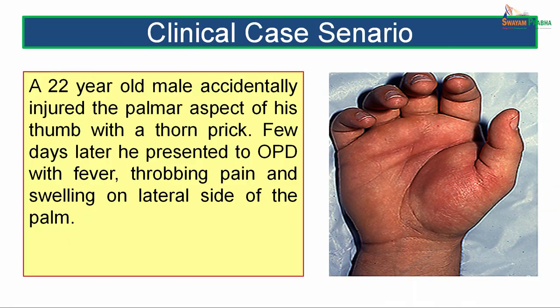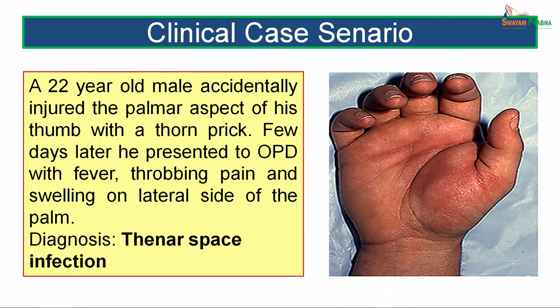Let us first see a clinical case scenario. A 22-year-old male accidentally injured the palmar aspect of his thumb with a thorn prick. Few days later, he presented to the OPD with fever, throbbing pain and swelling on the lateral side of the palm. The diagnosis given was of thenar space infection. As we go through the lecture, we will come to know why these symptoms have come up and how the diagnosis was reached.